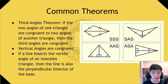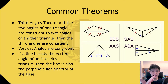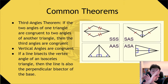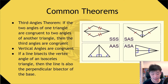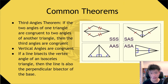The second theorem is that vertical angles are congruent. Vertical angles essentially make up an X, and the vertical angles are the angles inside the X — these two must be congruent. The last one is that if a line bisects the vertex angle of an isosceles triangle, then the line is also the perpendicular bisector of the base. This is because an isosceles triangle is symmetrical, meaning if we cut through the bottom, the base will also be cut in half.